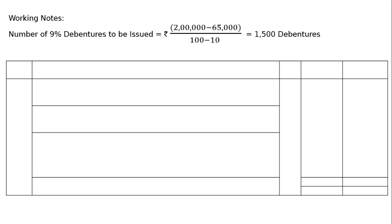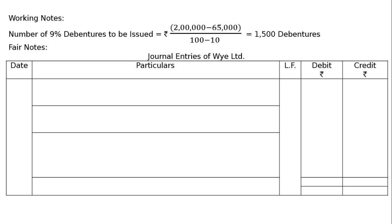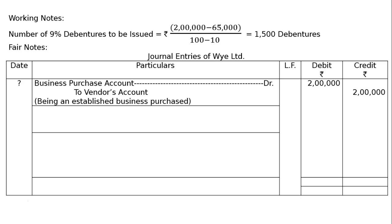Hence, there will be journal entries of Why Limited. We have to draw a proper journal format and we have to buy the business first. That is, Business Purchase Account debited to Vendor's Account — being an established business purchased — the amount will be Rs. 2 lakhs in the debit and Rs. 2 lakhs in the credit.